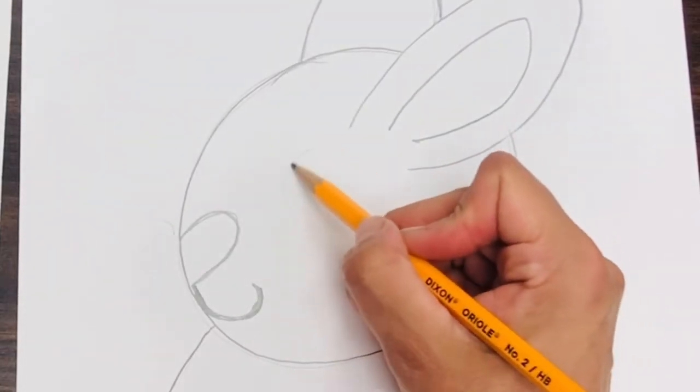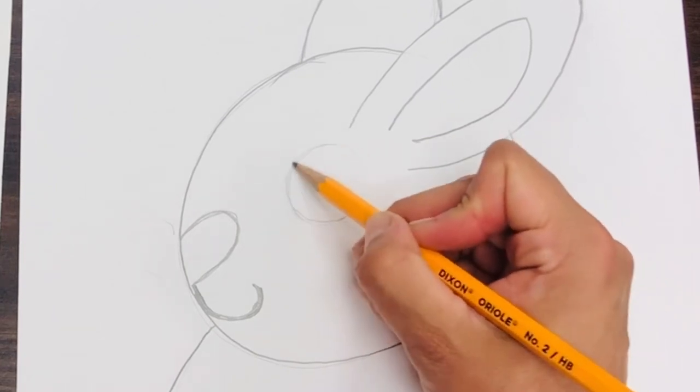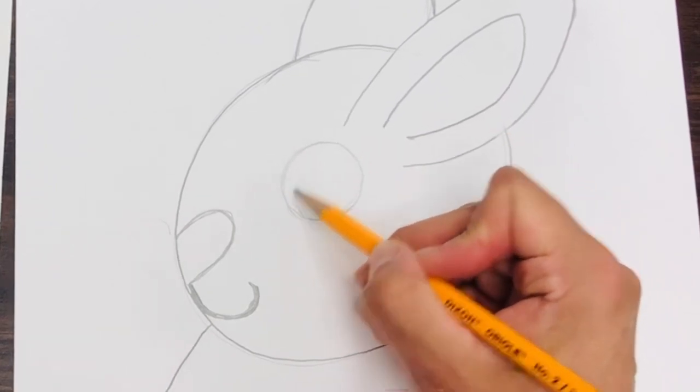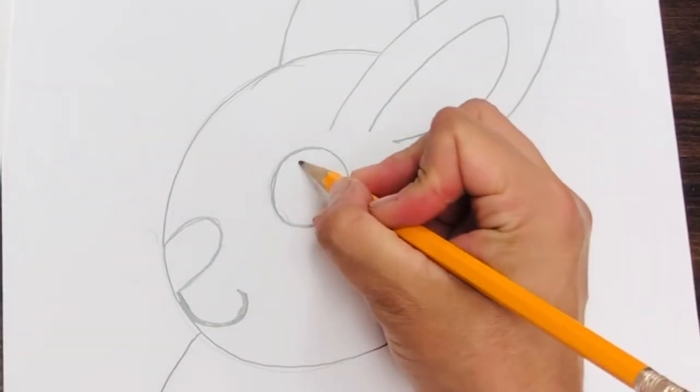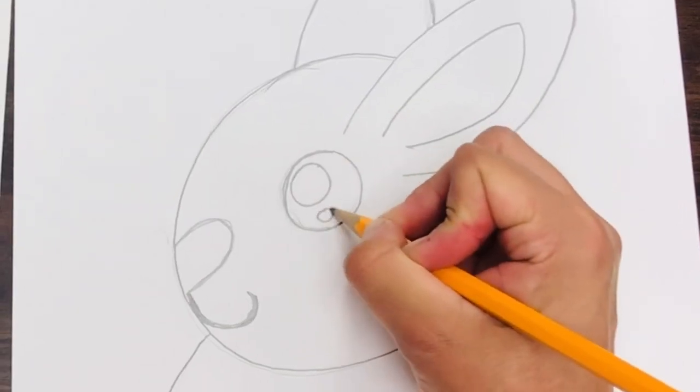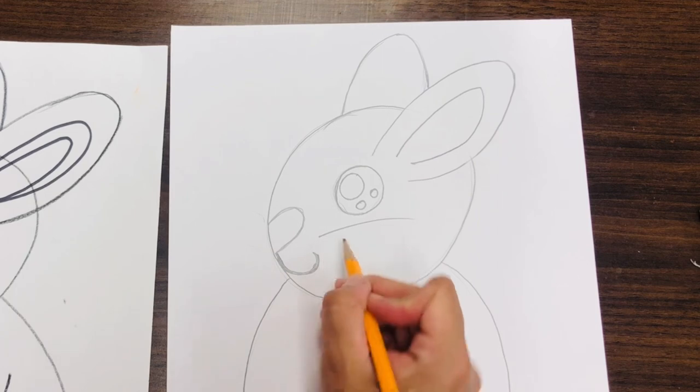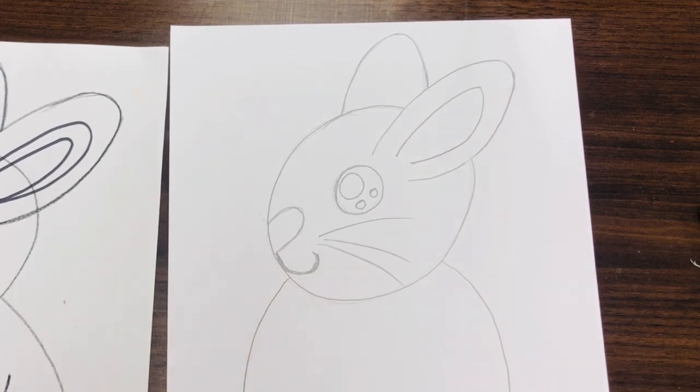The eye, we're going to make a big circle, sort of like the size of a quarter, like a big coin. And then you're going to make a big circle inside and two smaller circles on the bottom. That's the light reflection. You can make your whiskers. Yes, bunnies have whiskers. Lots of whiskers.